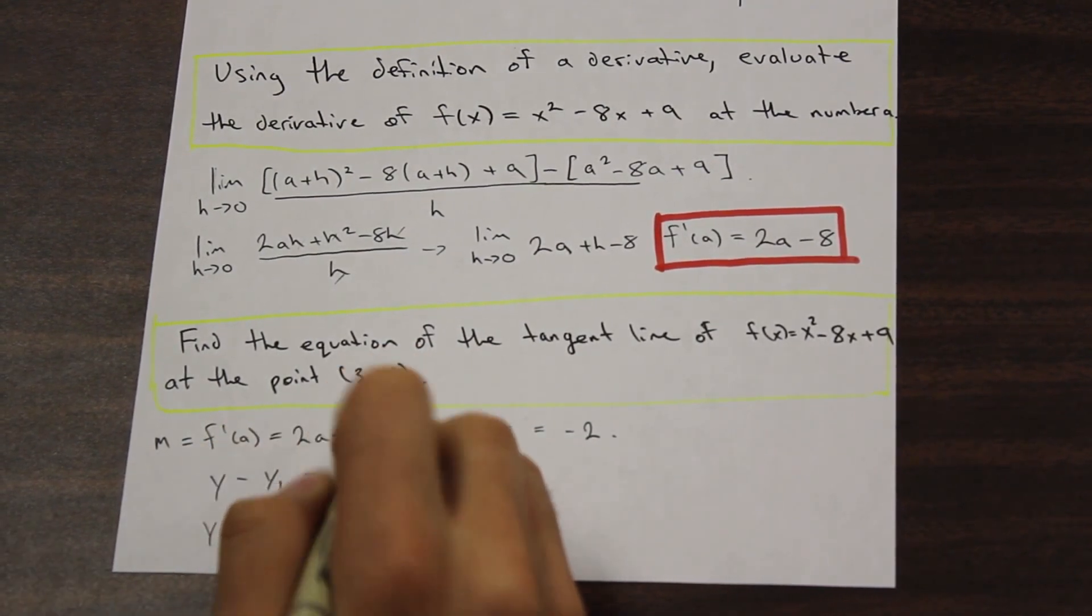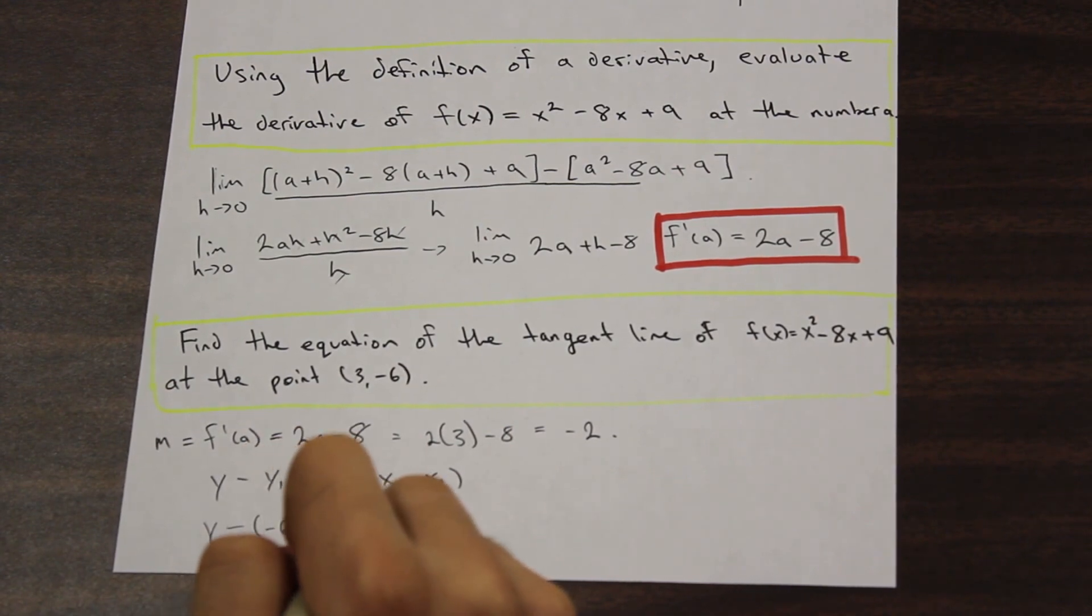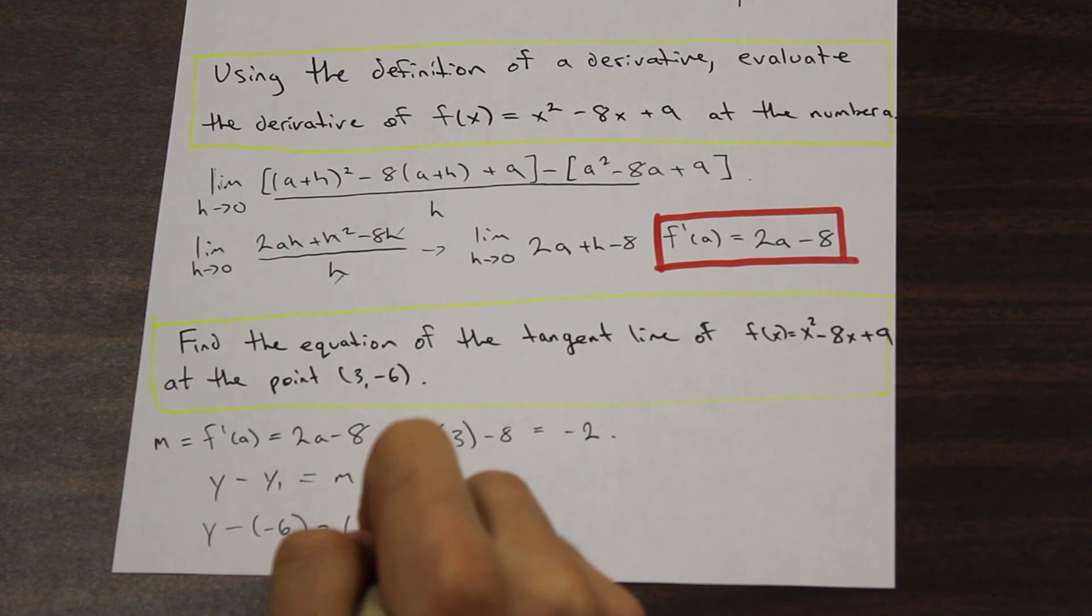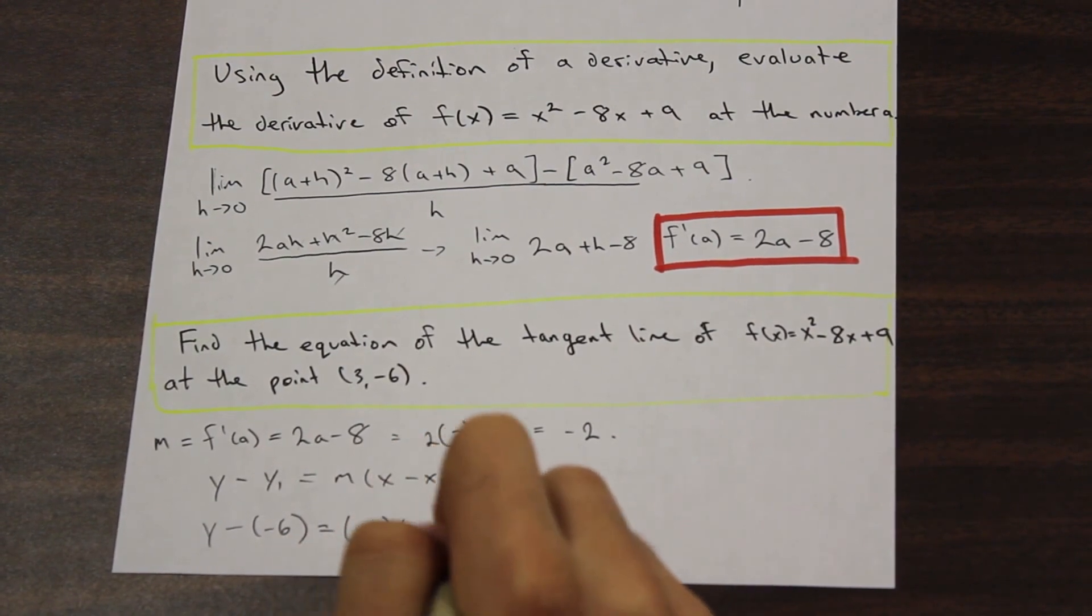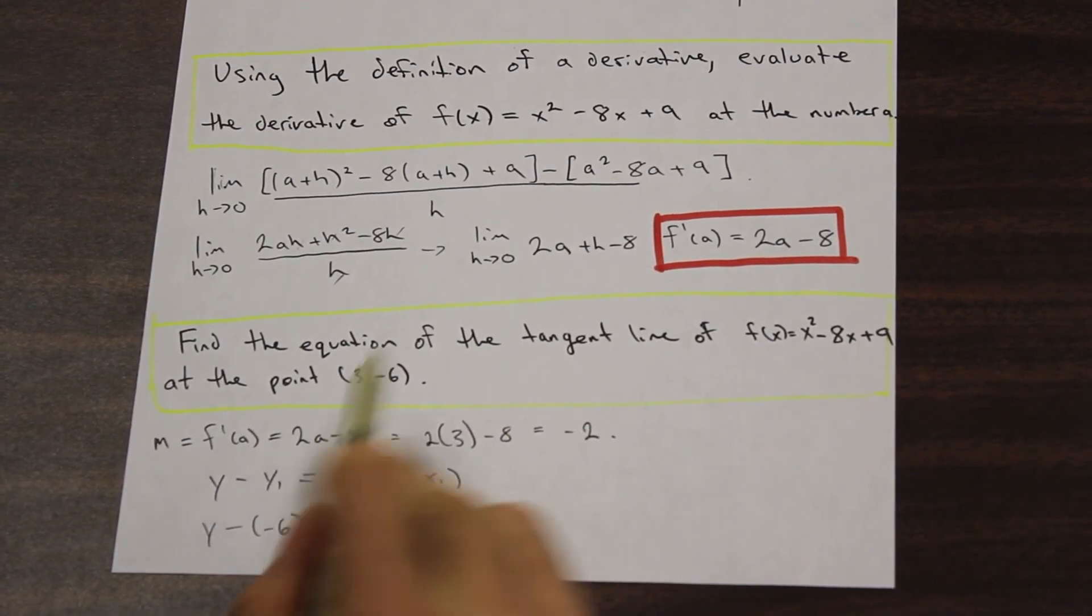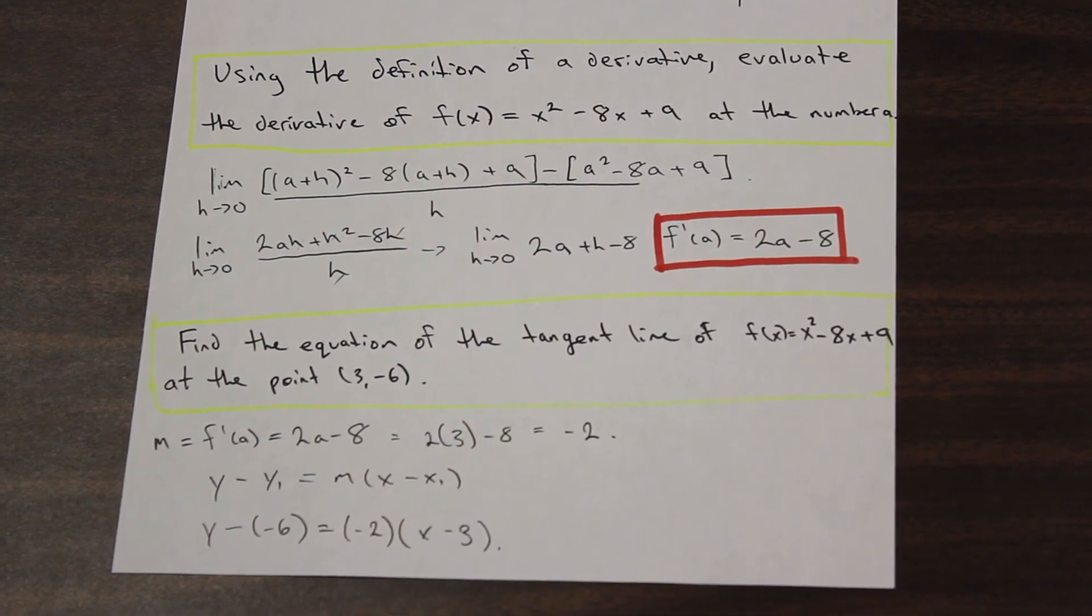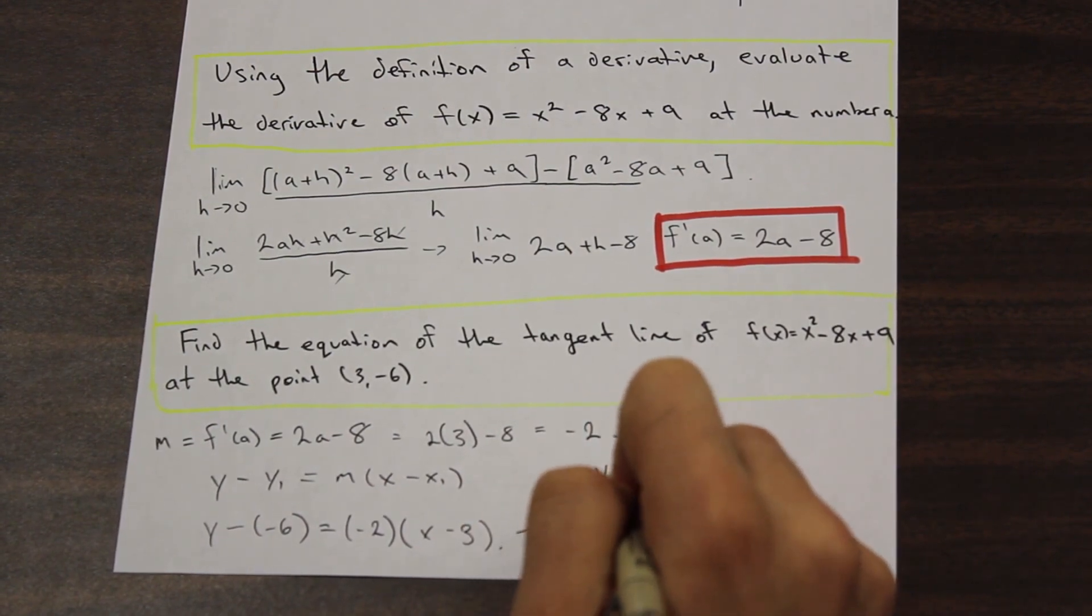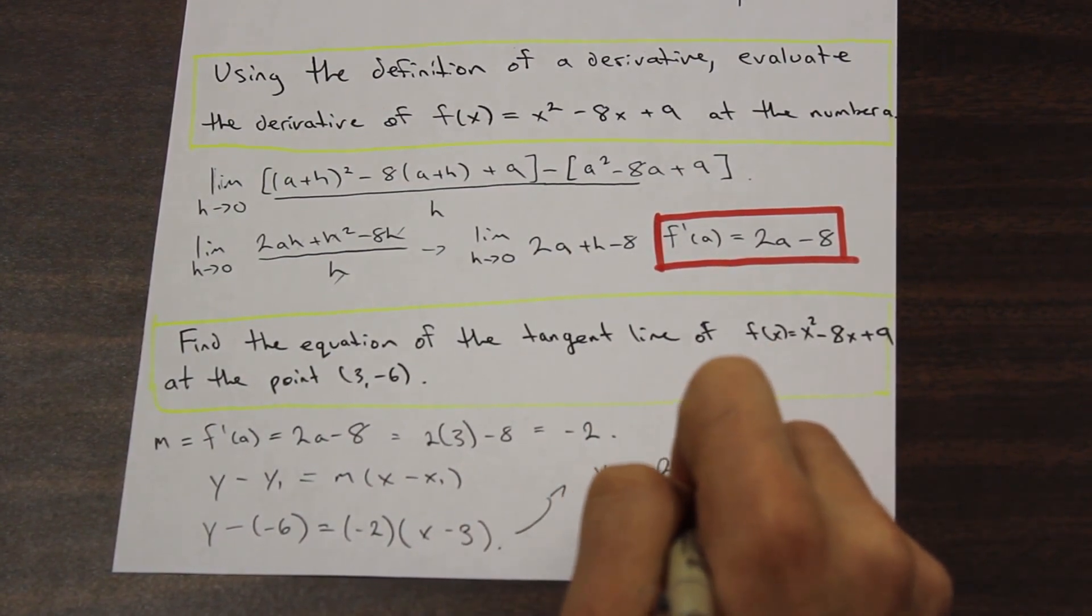So our y value here is negative 6. Our slope is negative 2. We already came to that conclusion there. And our x value is going to be 3. And if we go ahead and expand that, go ahead and do that on your own, we should arrive at the conclusion that y = -2x.